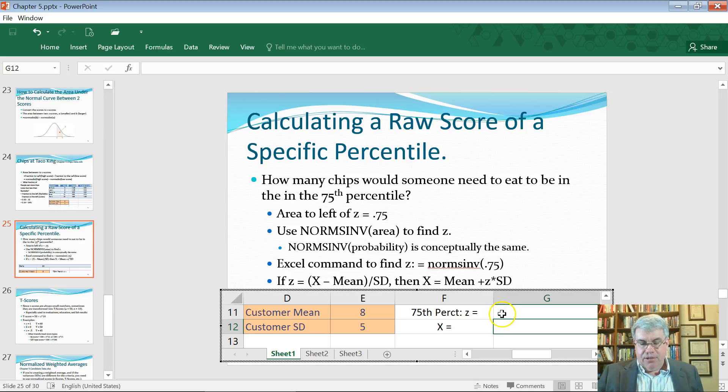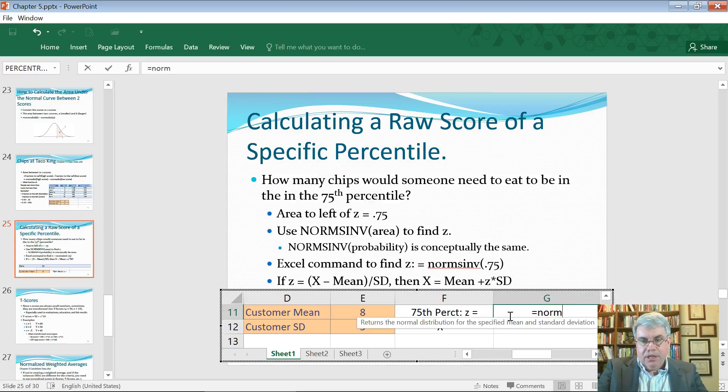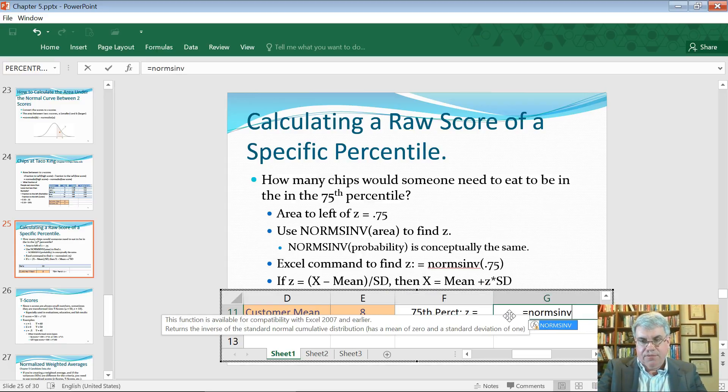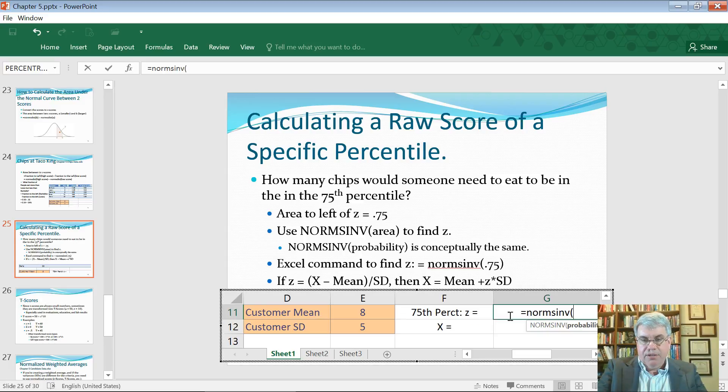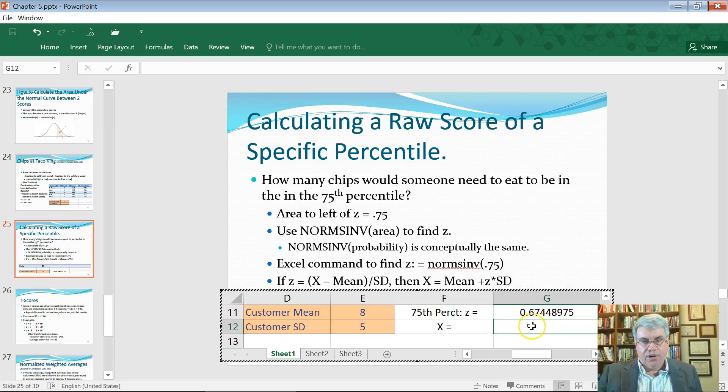The Excel command that we're going to use - and here I'm using Excel from within PowerPoint - I'm going to give the command equals NORM.S.INV, and then I'm going to put in 0.75. Close parentheses, and this will give us a z-score that has an area of 75 percent of the curve to the left of it. That gives 0.6744.